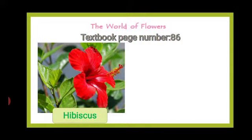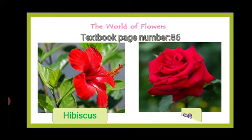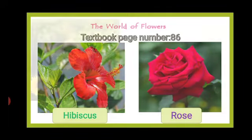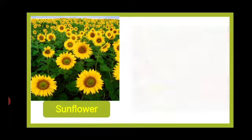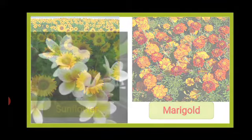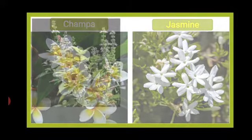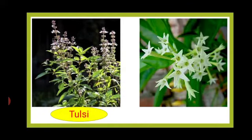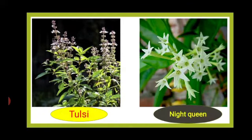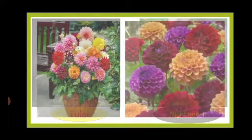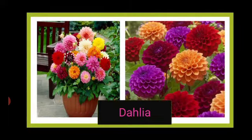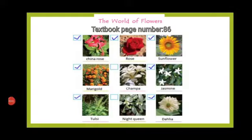Turn to your textbook page number 86. Identify the following flowers and write their names: Hibiscus, Rose, Sunflower, Marigold, Champa or Woodrose, Jasmine, Tulsi, Night Queen or Radhki Rani, Dahlia. Children, now identify these flowers and write their names in your book.